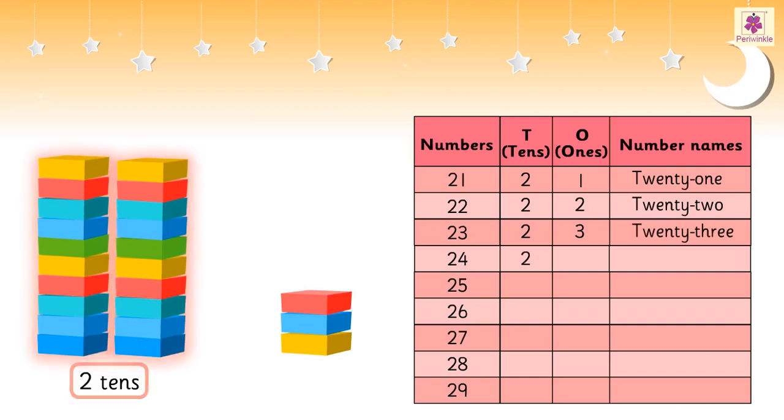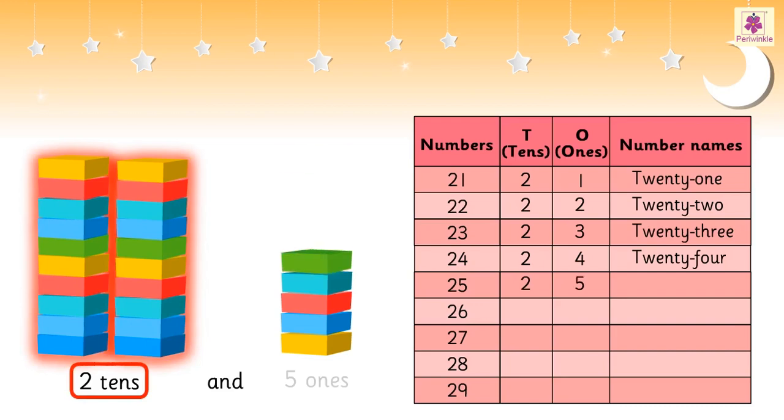Two tens and four ones is 24. Two tens and five ones is 25.